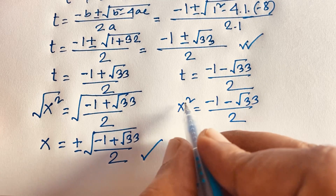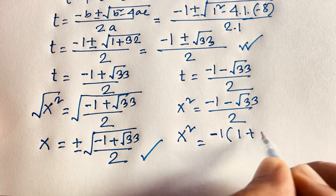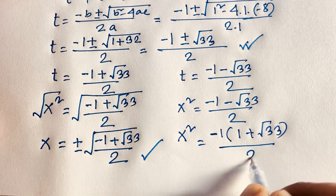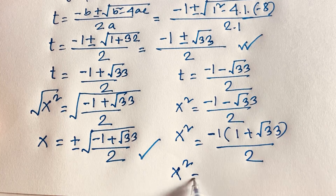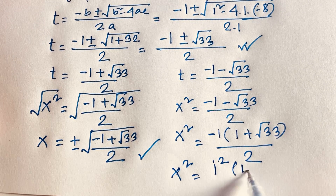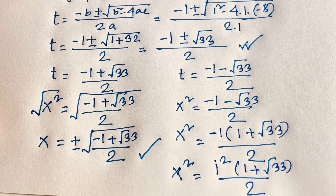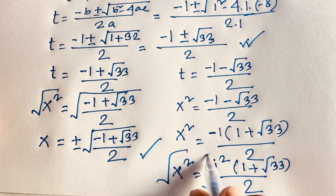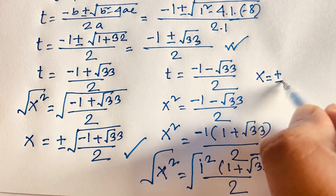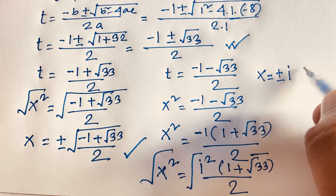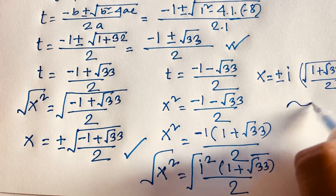For the rejected case, x squared equals minus 1 times (1 plus square root of 33) / 2. I can write this as x squared equals i squared times (1 plus square root of 33) / 2, since i squared equals negative 1. Taking square roots on both sides, x equals plus or minus i times square root of (1 plus square root of 33) / 2. This is the imaginary part of the solution.